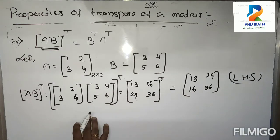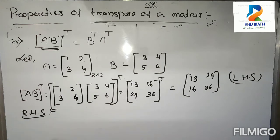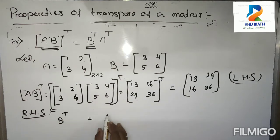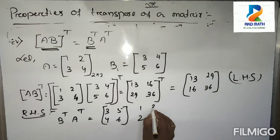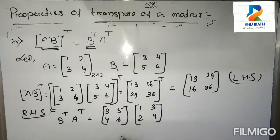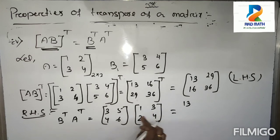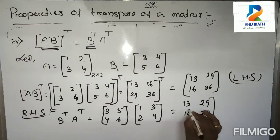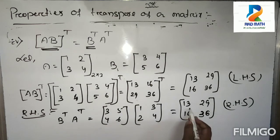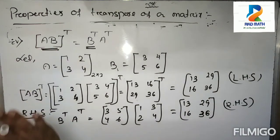For the RHS: B transpose times A transpose. B transpose of 3, 4, 5, 6 gives 3, 5, 4, 6. A transpose of 1, 2, 3, 4 gives 1, 3, 2, 4. Multiplying B transpose by A transpose gives the matrix 13, 29, 16, 36. LHS equals RHS, so property number 4 is proved. Note it down.